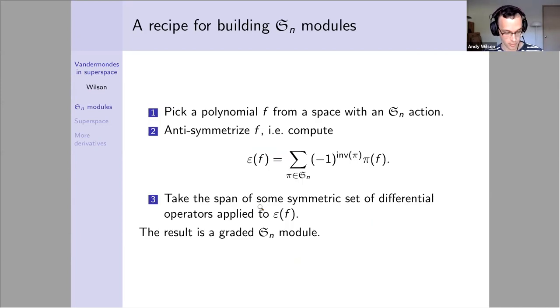Alright, so this is about Vandermonde in super space, joint work with Brendan Rhodes who I believe is in the chat if you have questions. I'm going to talk about a general recipe for building symmetric group modules. We're going to pick a polynomial from some space with a symmetric group action, anti-symmetrize the polynomial, and apply some differential operators. The result is going to be a graded S_n module.